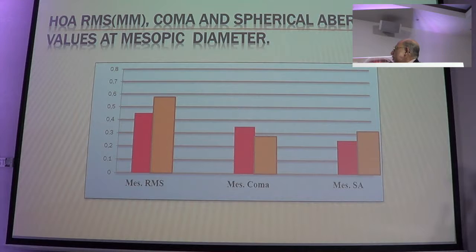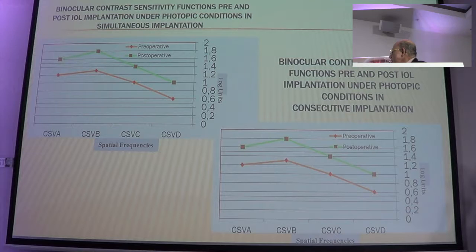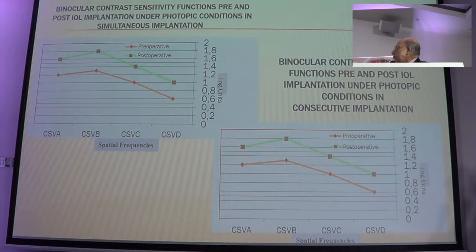The HOA, RMS, coma, and spherical aberration values have mesopic similarity, which is what we work with 90% of the time. The contrast sensitivity is also reasonable — unlike what people tend to say about contrast sensitivity dropping. Yes, you can measure a drop, but more often than not, the patient tends to say: 'I am seeing much better now than ever before.'